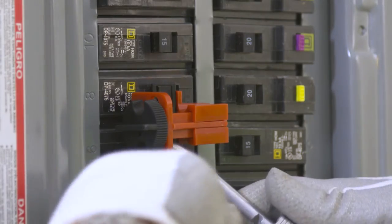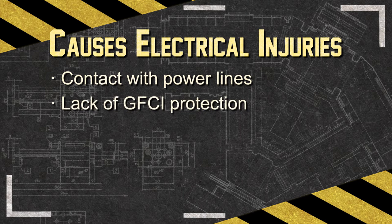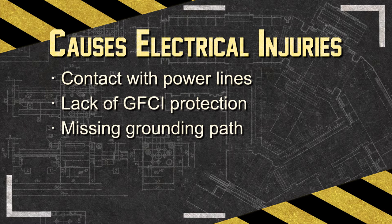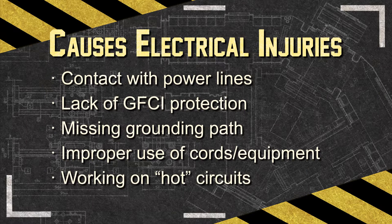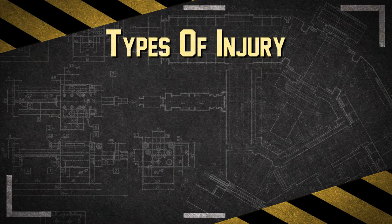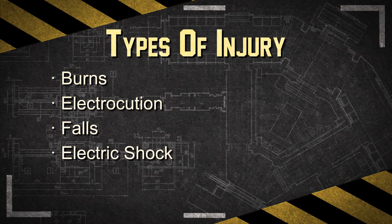The most common causes of electrical incidents and injuries include: contact with overhead or buried power lines and other live parts; lack of or improper ground fault protection; grounding paths missing or discontinuous; improper use of extension cords and equipment; and working on energized or hot electrical circuits. The main types of electrical injuries are burns, electrocution (which is always fatal), falls resulting from contact with electrical energy, and electric shock.